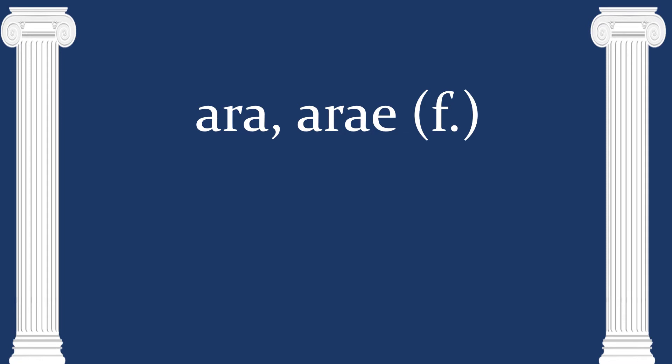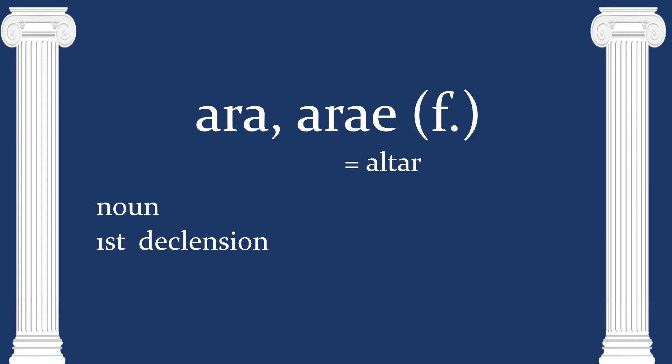The next word is ara, arae. This is also a noun of the first declension. It's an altar — not the verb 'alter' which is spelled with an E, but the noun, a place where something is sacrificed or burned. And that explains so many of the derivatives that we get, like ash, arson, arid, azalea — a flower that has fiery colors.